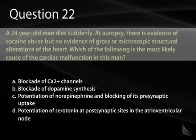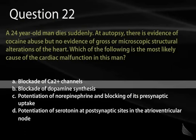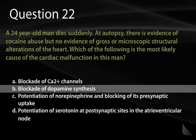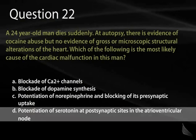Question 22. A 24-year-old man dies suddenly. At autopsy, there is evidence of cocaine abuse, but no evidence of gross or microscopic structural alterations of the heart. Which of the following is the most likely cause of the cardiac malfunction? A. Blockade of calcium channels. B. Blockade of dopamine synthesis. C. Potentiation of norepinephrine and blocking of its presynaptic uptake. D. Potentiation of serotonin at postsynaptic sites in the AV node. Or E. Stroke due to malignant hypertension.